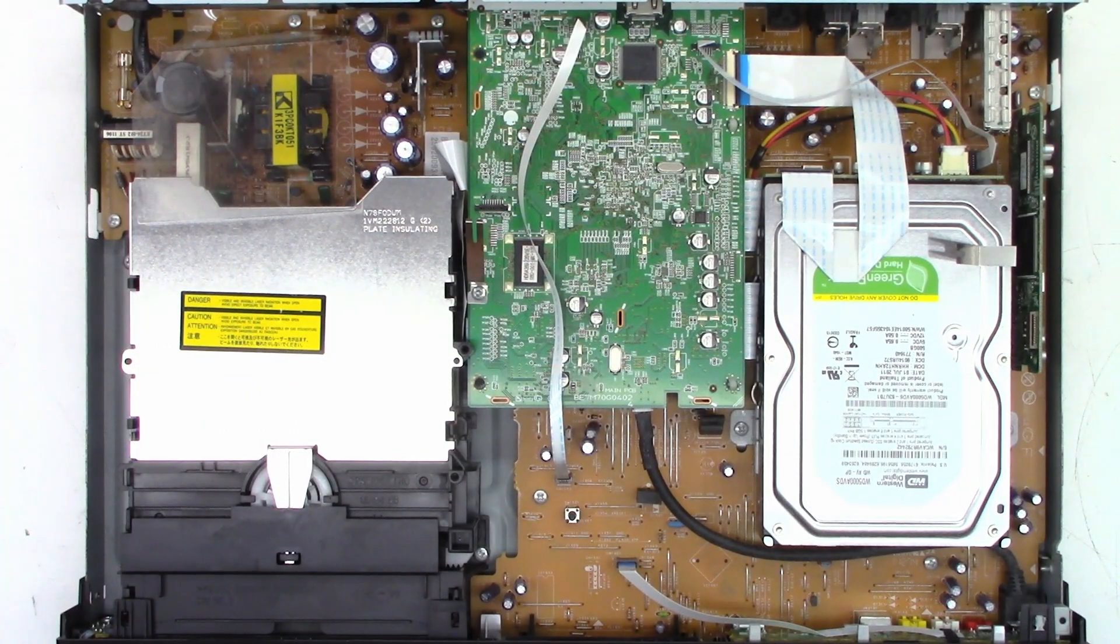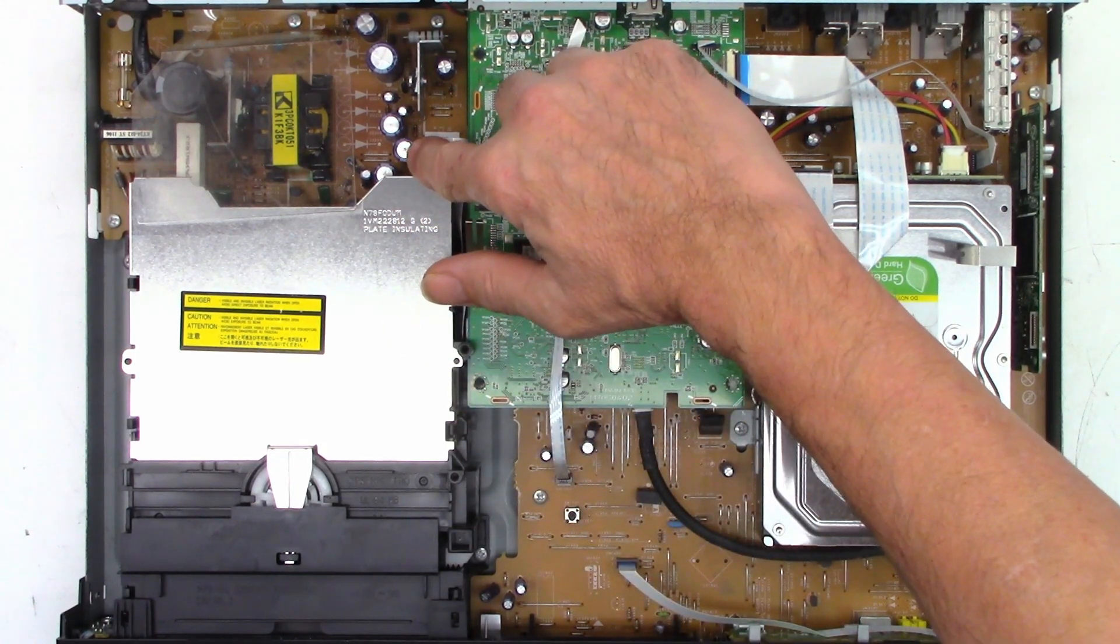There is the inside of it. It does have a Western Digital Green 500 gigabyte hard drive, and this board looks remarkably similar to the board that you would find in a DVD VCR combo. Just slight differences, but take a look at what I see right off the bat right there.